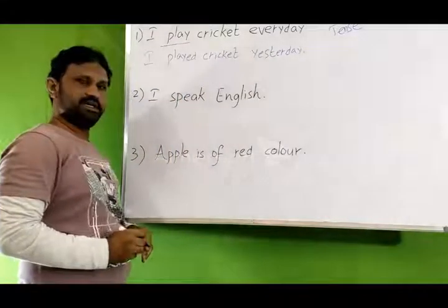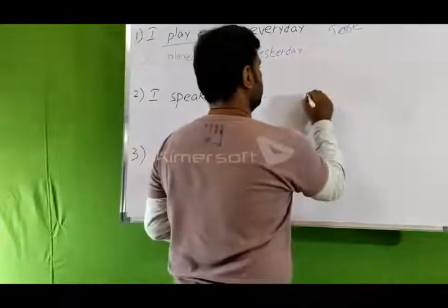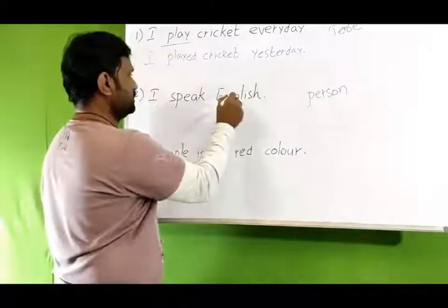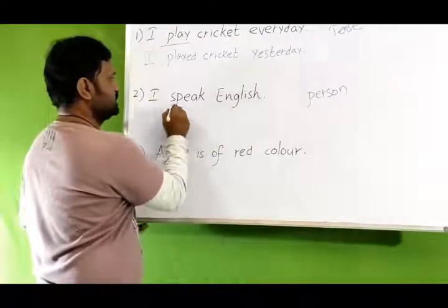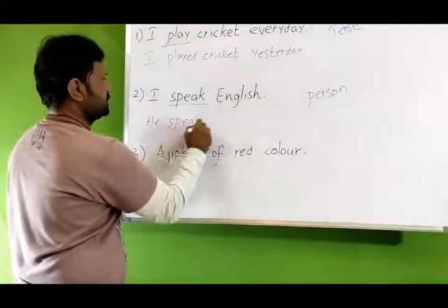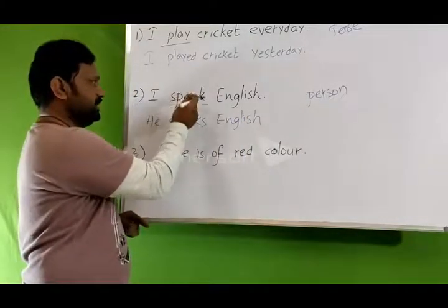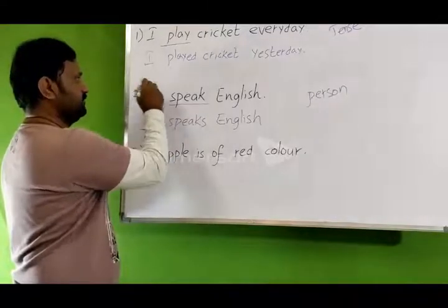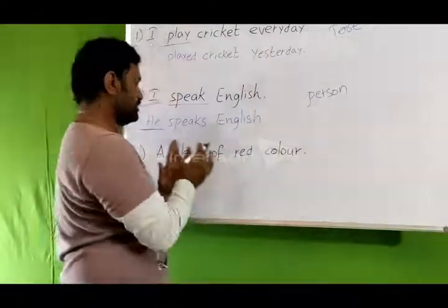Observe the second example: 'I speak English.' In this example, you will understand how the finite verb changes its form as per the person — first person, second person, and third person. 'I speak English' — the subject 'I' is in the first person and the verb is 'speak.' Now observe: 'He speaks English.' The word 'speak' changed its form to 'speaks' as per the person. 'He' is third person whereas 'I' is first person, so the finite verb changes its form.